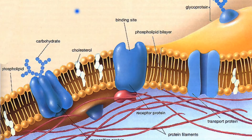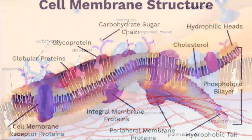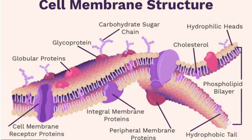A metaphor you could use for the cell membrane is border patrol — it's like the border to the cell and checks what gets in and out. This is called a semipermeable membrane, and it selectively allows things to pass to and from the cell. Going back to the things inside of the membrane itself, we have proteins, and there are a variety of proteins embedded here. The proteins that go all the way across the membrane from one end to the other are known as transmembrane proteins, which are a special class of integral proteins.